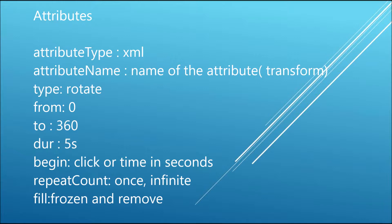Now I'll discuss some attributes. 'attributeType' — SVG is written in XML format. 'attributeName' — you can write values like 'fill' or 'transform'; if you are using transform then type will be rotate. Then there is 'from' and 'to', duration for how long you want the animation to run, and 'begin' — you can set a time or trigger on a click. There is also 'repeatCount' which can be set to once, a number, or infinite.